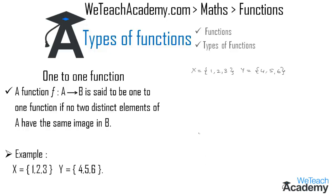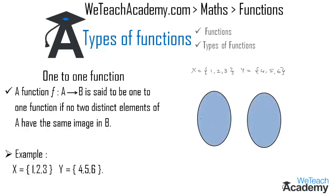For example, we have the elements of set A as 1, 2, 3 and the elements of set Y as 4, 5, 6. Let us represent both sets in the form of a Venn diagram. The first Venn diagram represents set X and the second represents set Y. Now let us write the elements of both sets in their respective Venn diagrams and map the elements of X with Y. So let us map 1 with 4, 2 with 5, and 3 with 6.